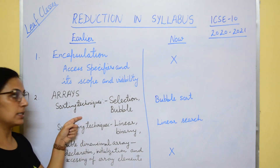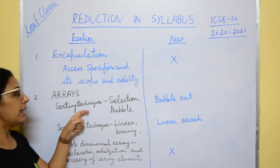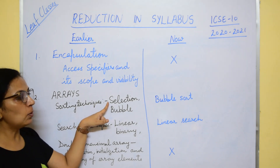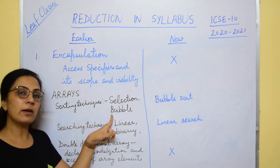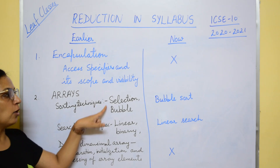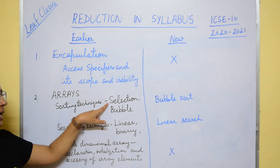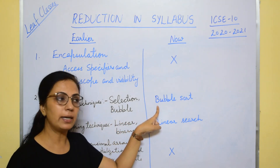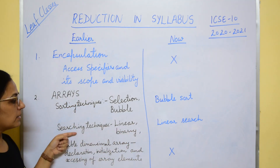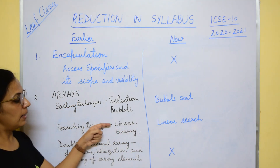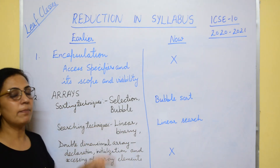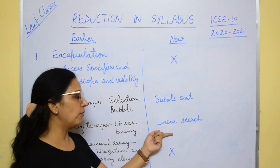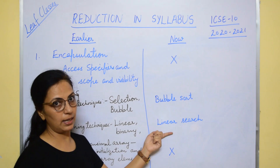Now we move on to arrays. For sorting, we earlier had 2 techniques — selection sort and bubble sort. Now, selection sort is removed and you have only bubble sort. For searching techniques, linear and binary search were present. Now you have only linear search.